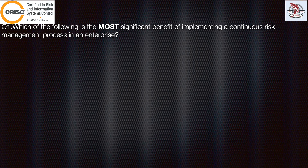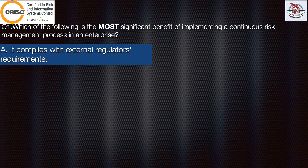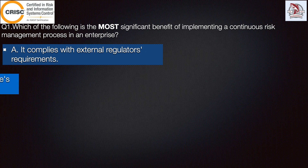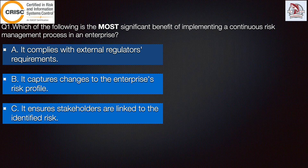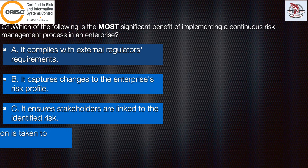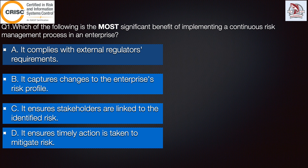The first question states: which of the following is the most significant benefit of implementing a continuous risk management process in an enterprise? Option A: it complies with the external regulators and requirement. Option B: it captures changes to the enterprise risk profile. Option C: it ensures stakeholders are linked to the identified risk. Option D: it ensures timely action is taken to mitigate risk.